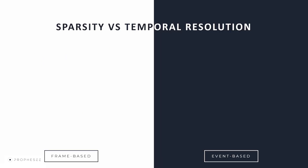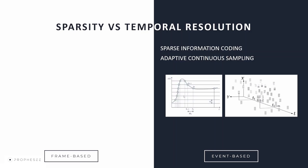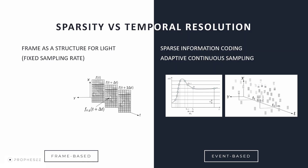Events can be visualized as 3D points in XYT space. The data are very sparse but continuous over time, and the sampling rate is scene-driven, depending on activity within the scene — data is generated only on crossing the contrast sensitivity thresholds. In contrast, frame cameras generate full frames at a fixed sampling rate, even if nothing happens in the scene, with a fixed and constant frame size making the amount of data predictable and unaffected by scene activity.